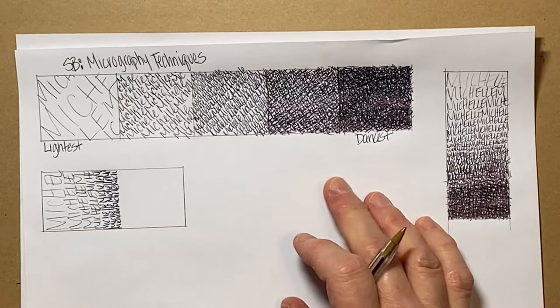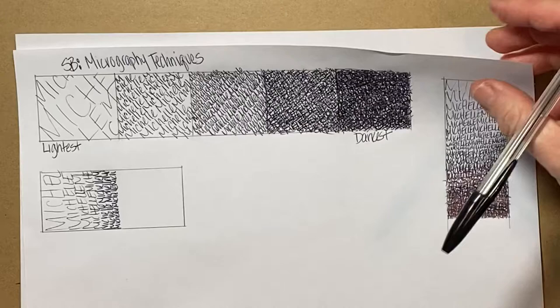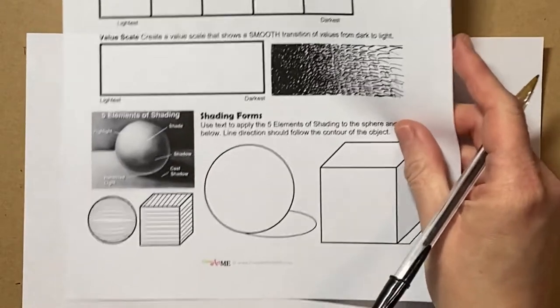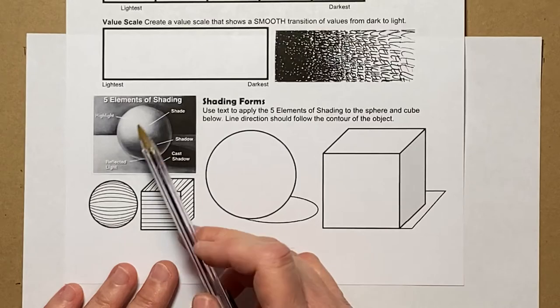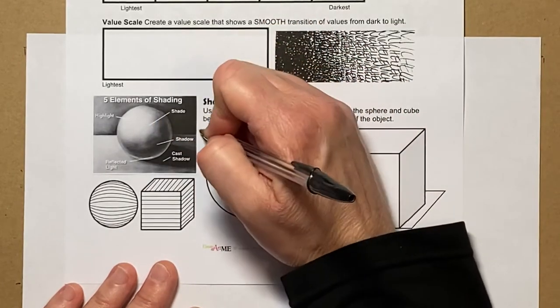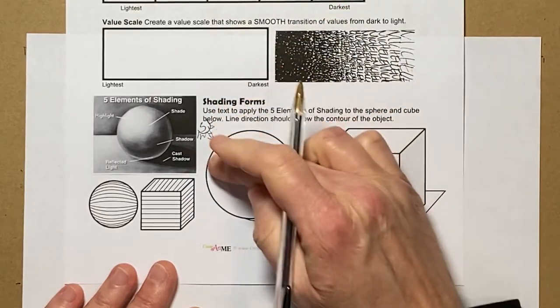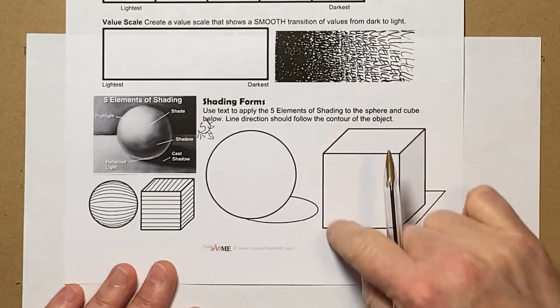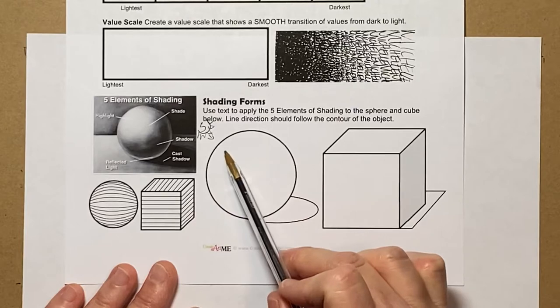Now what we're going to do is we are going to take a look at the bottom here and shading forms. Remember, whenever we're shading something we need to know where the light source is. So we're going to pretend that we've got a sun right here shining down. Our highlights are going to be over here on this side. Our shadows are going to be on the other side.